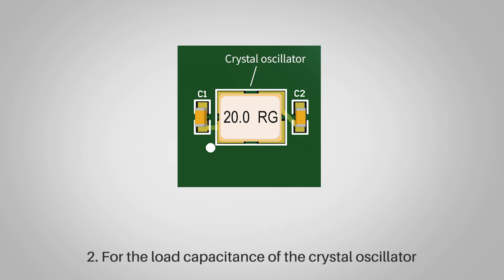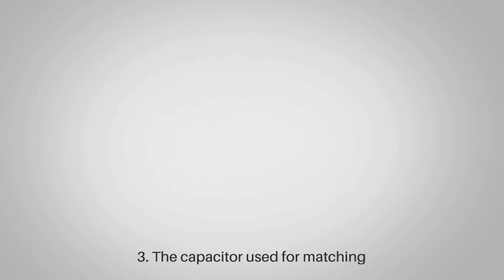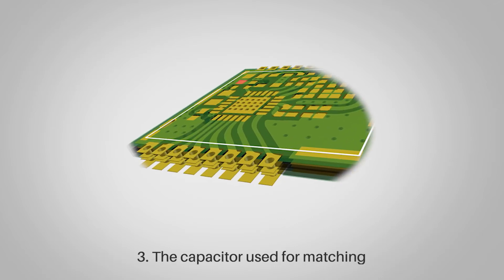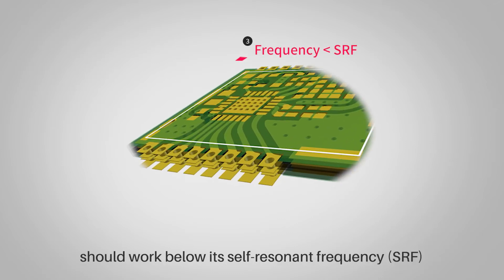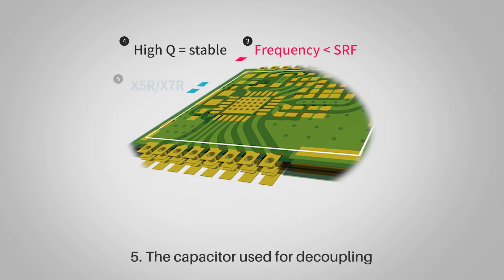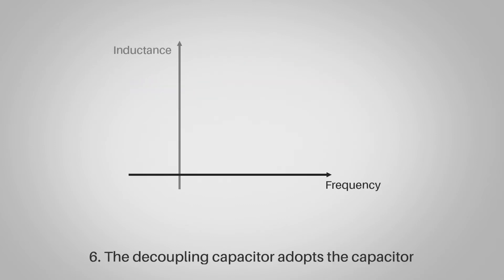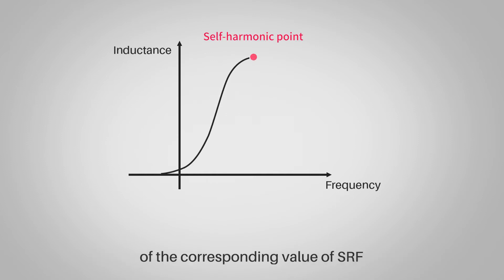Rule two: For the load capacitance of the crystal oscillator, two specifications of C0G/NP0 are often used. Rule three: The capacitor used for matching should work below its self-resonant frequency (SRF). Rule four: RF circuits often use high-Q capacitors. Rule five: The capacitor used for decoupling generally uses X5R or X7R.